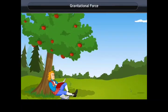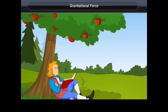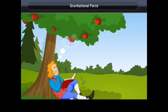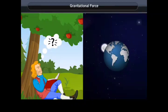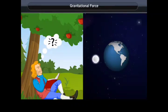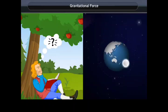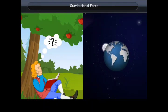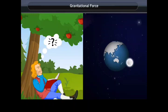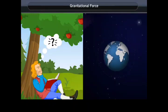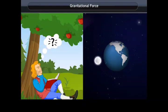Isaac Newton was sitting under an apple tree when suddenly an apple fell on his head. Newton conjectured the picture of universal gravitation, explaining that the force pulling the apple to the ground and the force keeping the Moon in orbit around the Earth are one and the same. The same law governs the motion of celestial bodies and the falling of an apple from a tree.